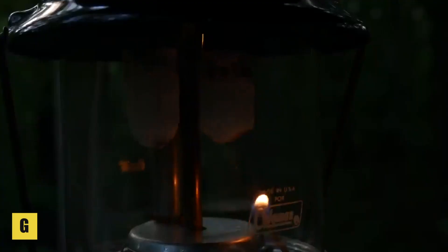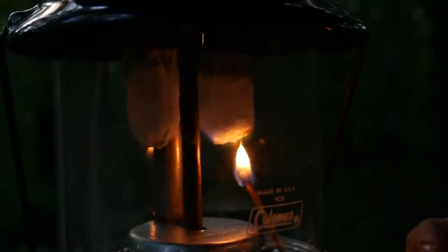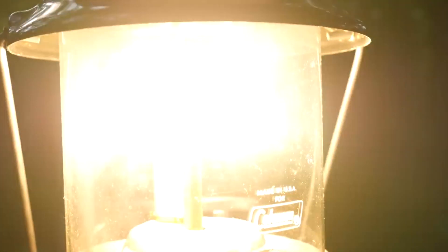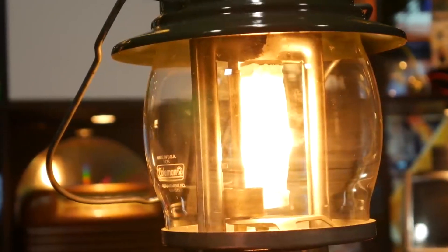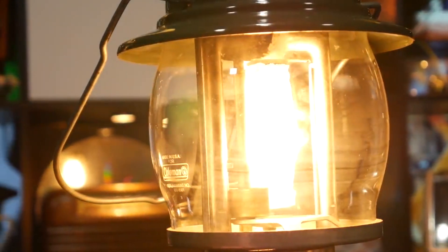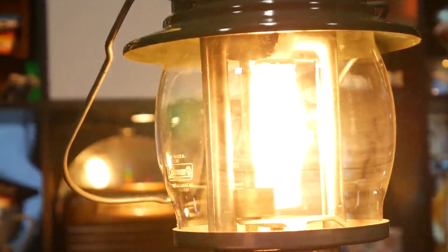Gas mantles: Thorium dioxide, also known as thorium-IV oxide or thoria, was historically used in gas mantles for lanterns and lamps. Thorium has a high melting point and emits a bright white light when heated, making it suitable for illumination purposes.